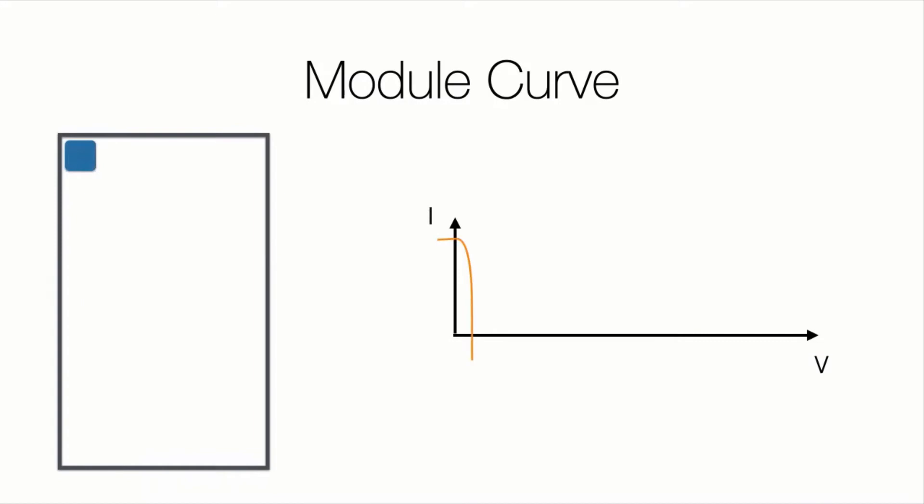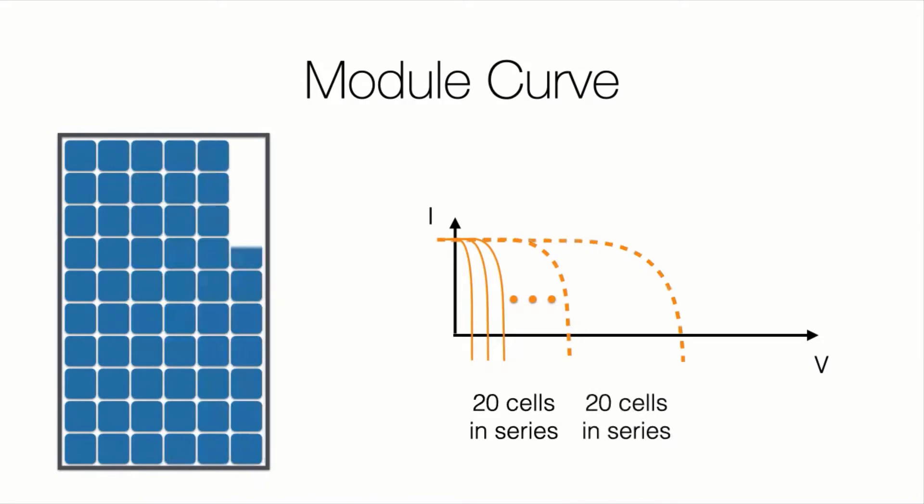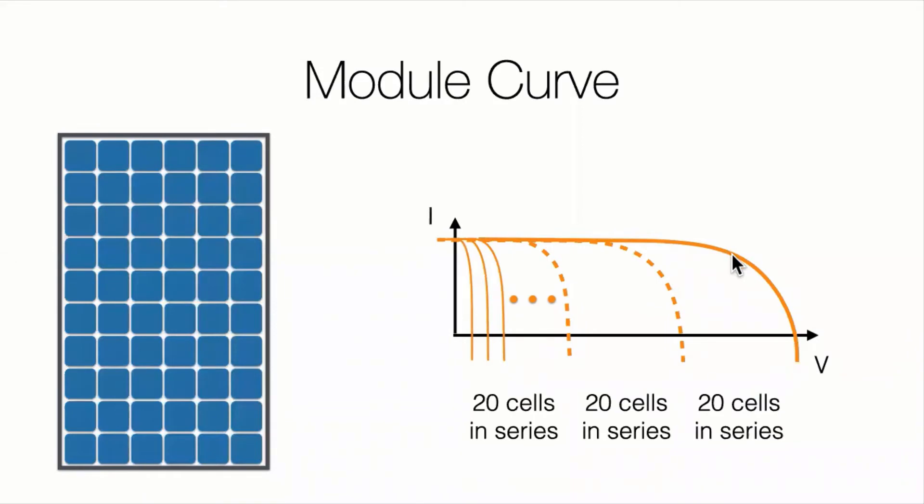So now I'm going to create a whole module. I start with one cell, one curve. I add another cell, another cell in series. If I have 20 cells in series, I have a group of 20. Push my curve out. Another group of 20 and another group of 20 could make a module with 60 cells. And that ends up with the voltage curve of the module, which is always made up of a bunch of cell curves. That's how we get the module curve.